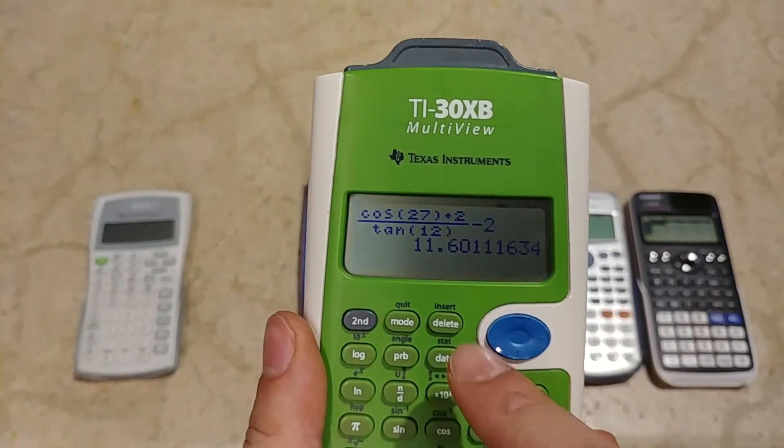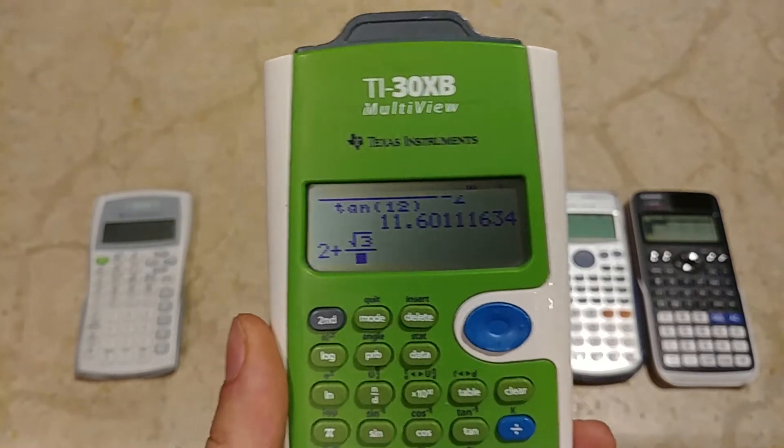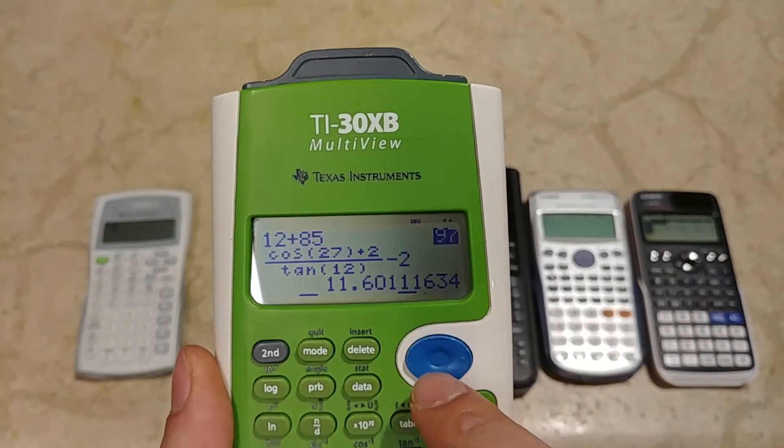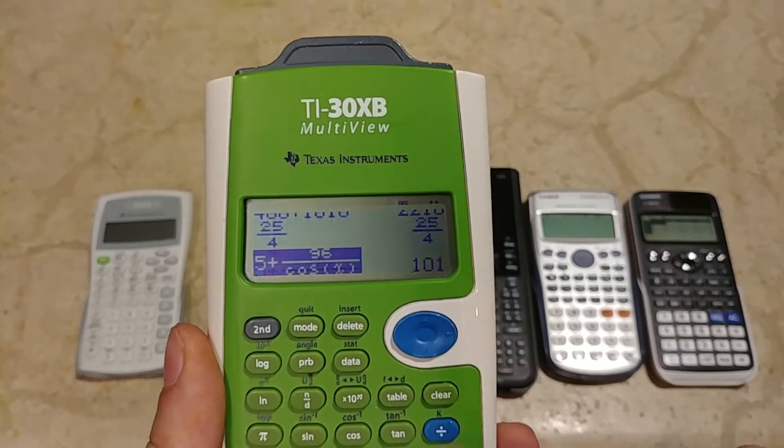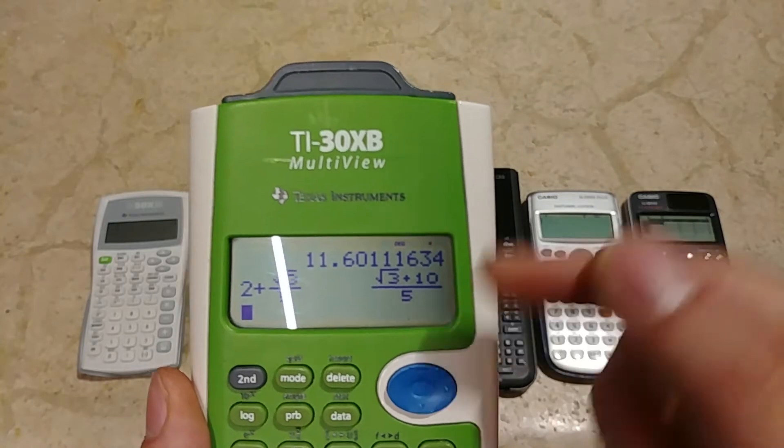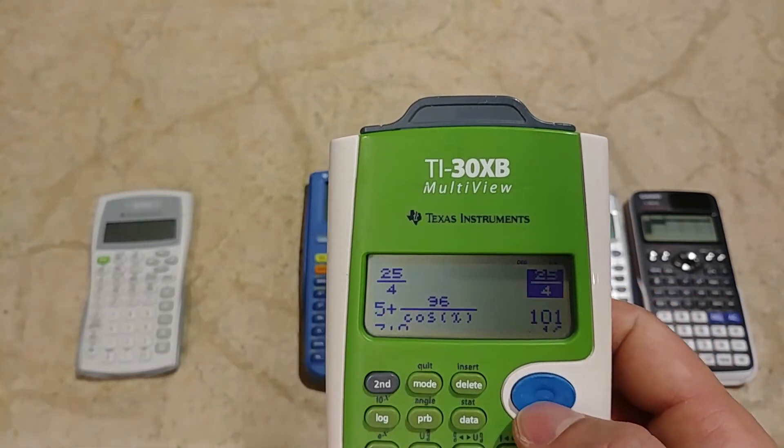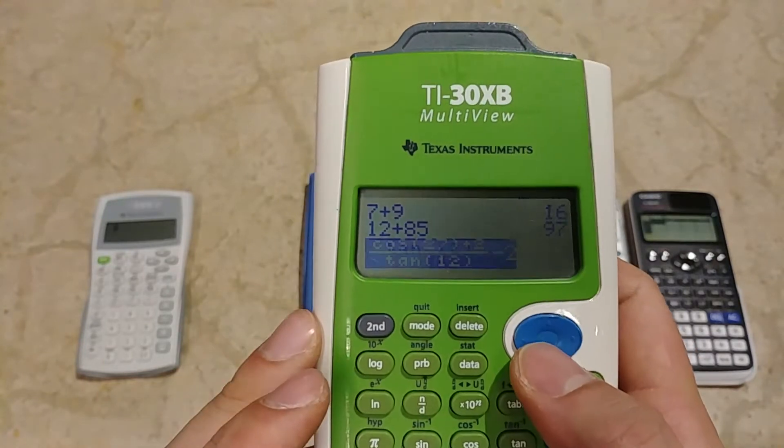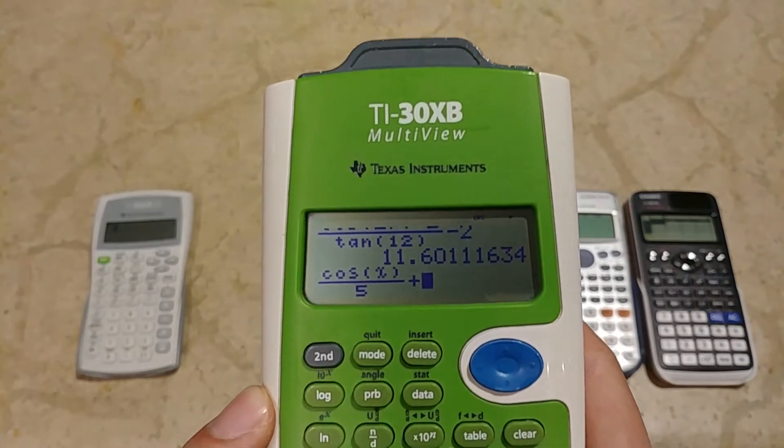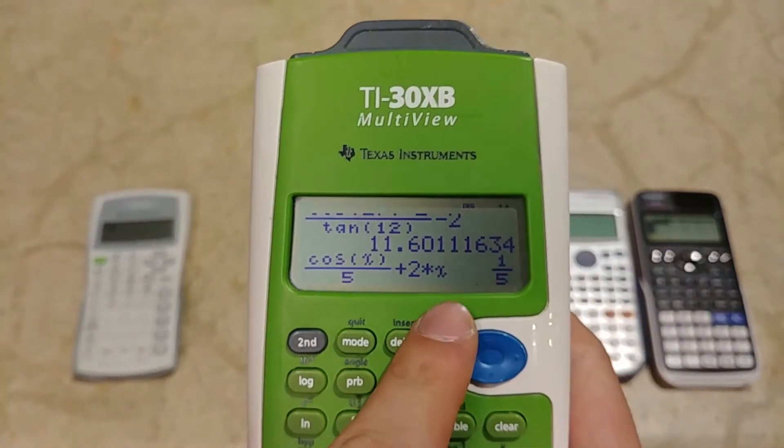Another important function that this model has is that if I write another equation, for example 2 plus square root of 3 over 5, we have the result and we can go through all the results we calculated in the past, even if we turn off the calculator, just moving with the arrows. We can write equations with an X symbol, and the X is the previous value we can memorize into this variable.